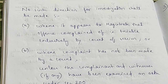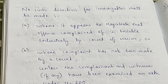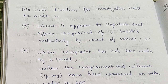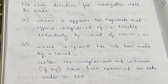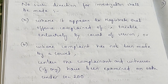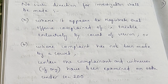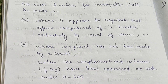No direction for investigation shall be made where it appears to the magistrate that the offense complained of is exclusively triable by a court of session, or where the complaint has not been made by a court. In these two cases, the direction of investigation shall not be made. However, in the second case, it can be made only after the complainant and witnesses, if any, have been examined on oath under Section 200.